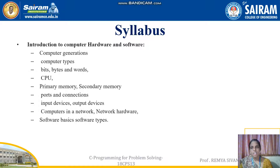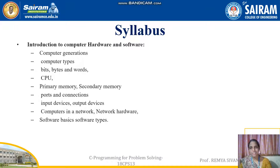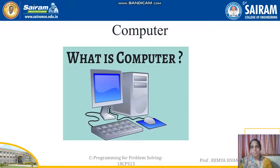In the first part, we cover different types of software, computer generations, computer types, bits and words, components of a computer, computer networks, devices required to make a computer network, and different types of software. So let us start with what is a computer. A computer is an electronic device that accepts input through input devices, processes it with the help of the CPU, and produces output with the help of the output device.